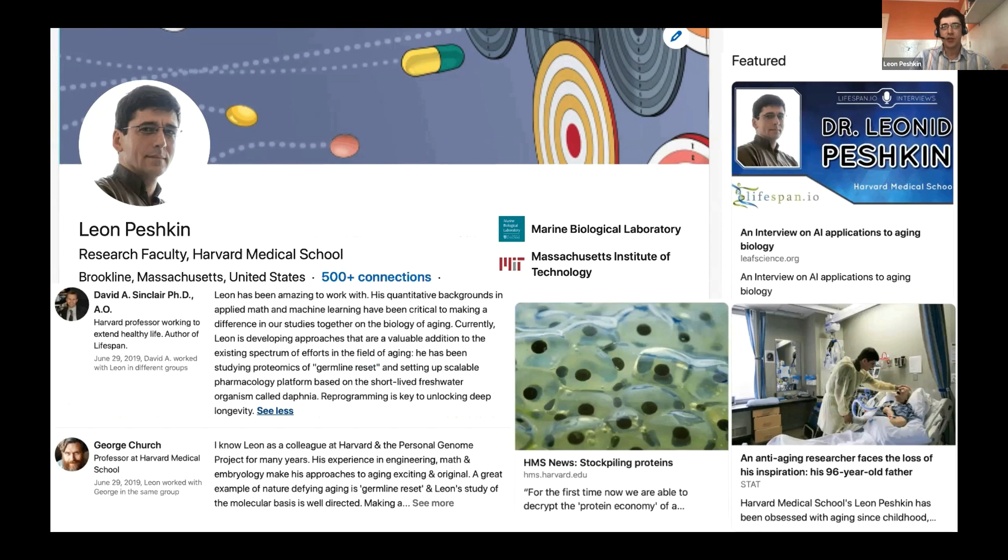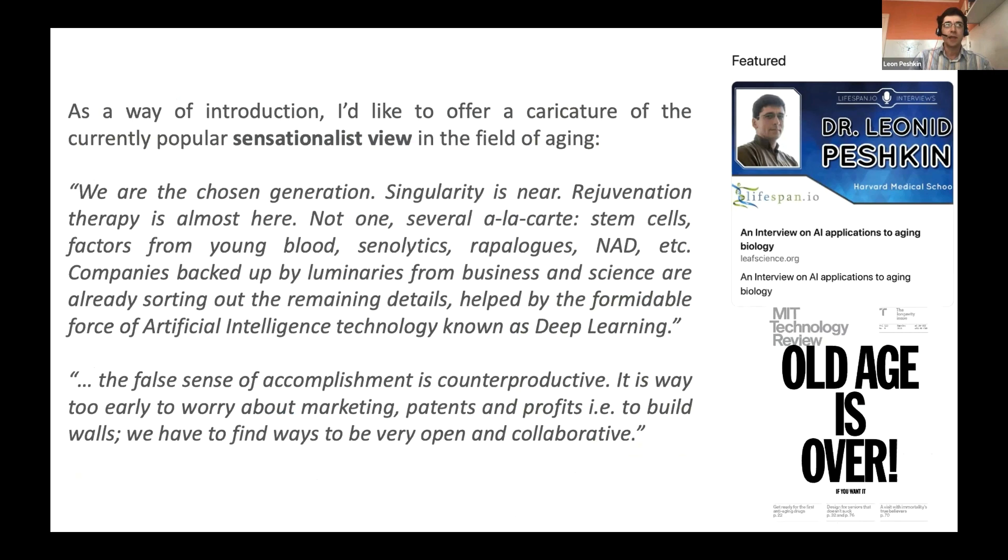But first, as a way of quick introduction, I wanted to come back to my own interview with Lifespan Iowa. I hope you excuse me for quoting myself. Leon Peshkin says here: I would like to offer a caricature of the current popular sensationalist view in the field. The caricature is, we are a chosen generation, singularity is near, rejuvenation therapy is almost here - not a single therapy, several a la carte: stem cells, young blood, senolytics, rapologues, NAD and so on. Companies backed up by luminaries from business and science are already sorting out remaining details, helped by formidable force of artificial intelligence known as deep learning.